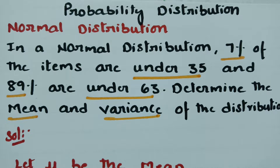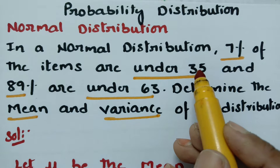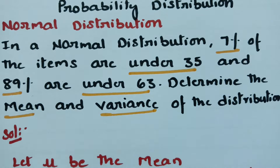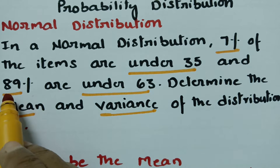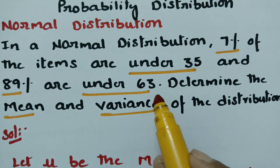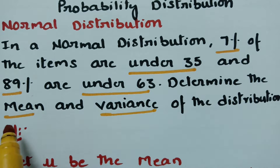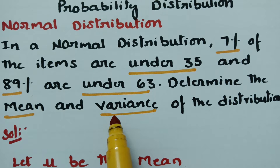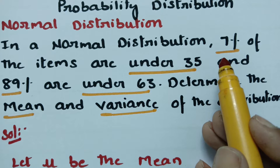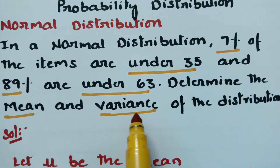It's very simple. 7% of the items are under 35 means we have to take the area to the left of the ordinate. 89% are under 63 means we take the value towards the left side. If the percentage is given, we have to understand the probability is given and we have to find out the other variables — that is, mean and the variance.